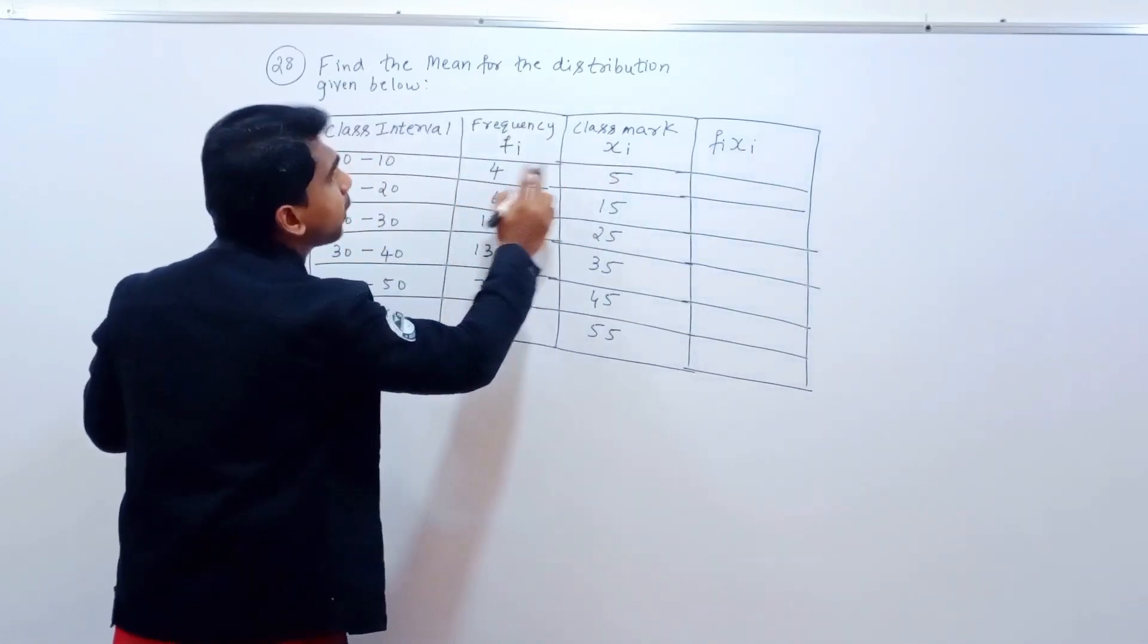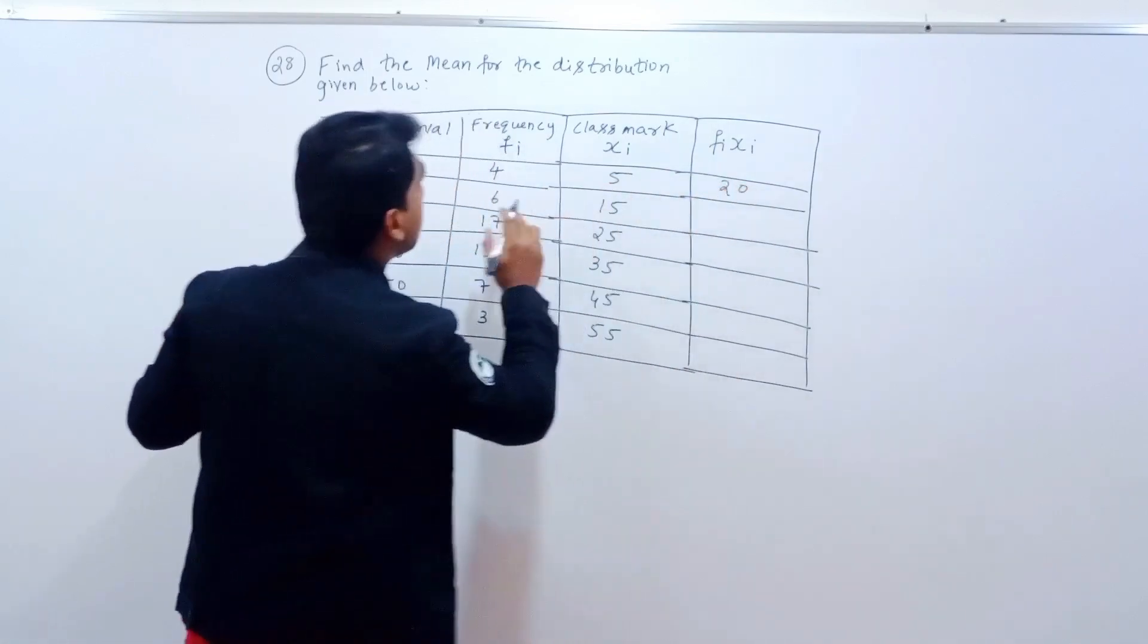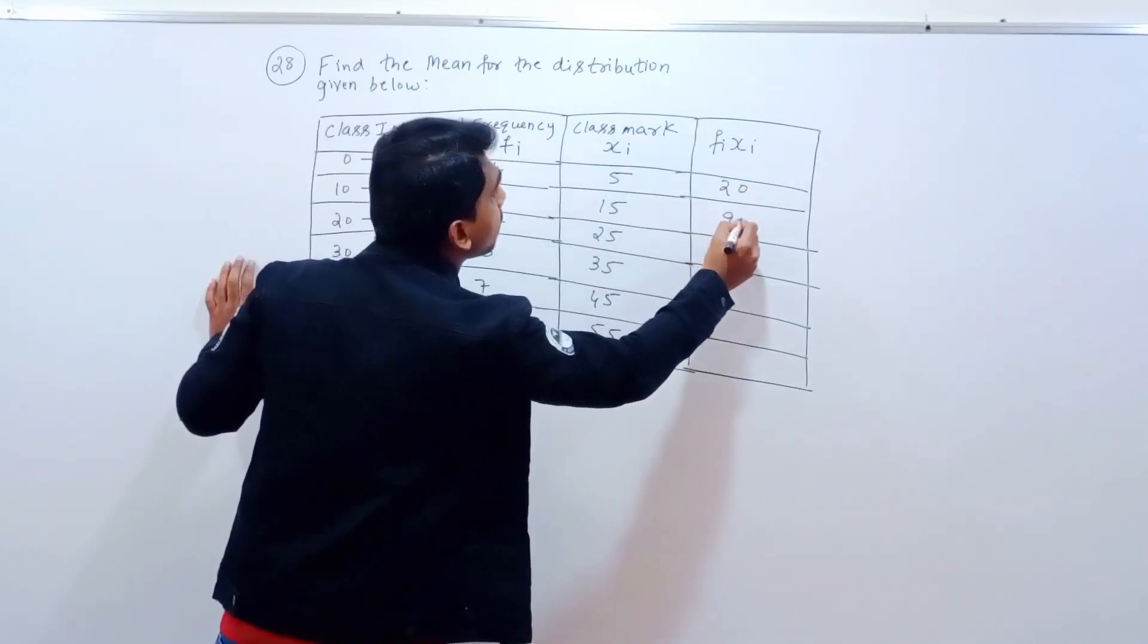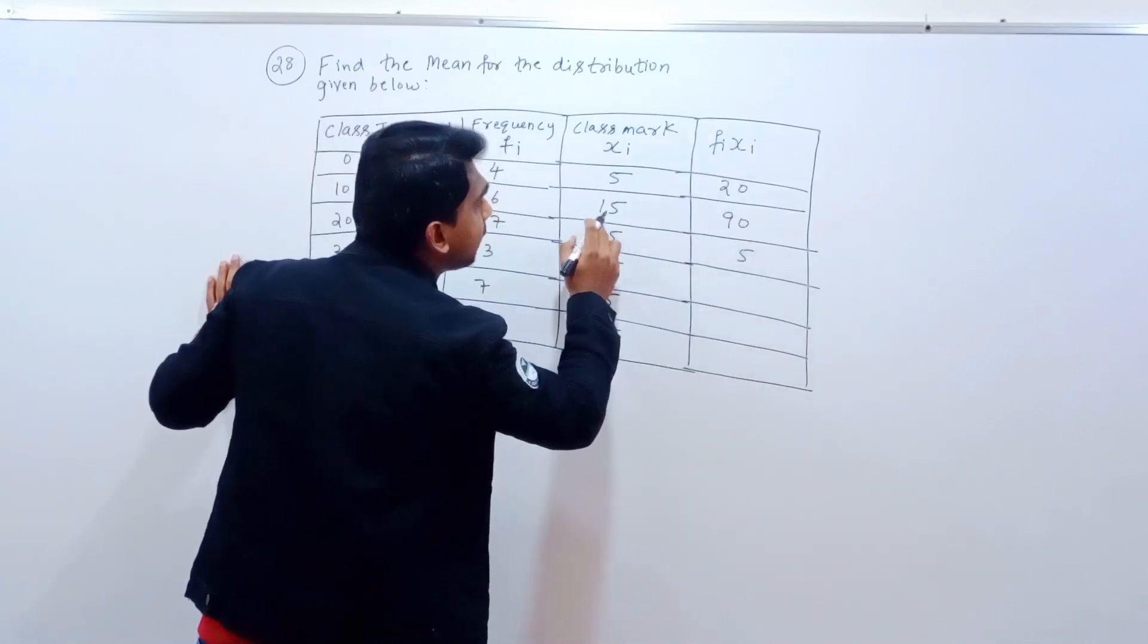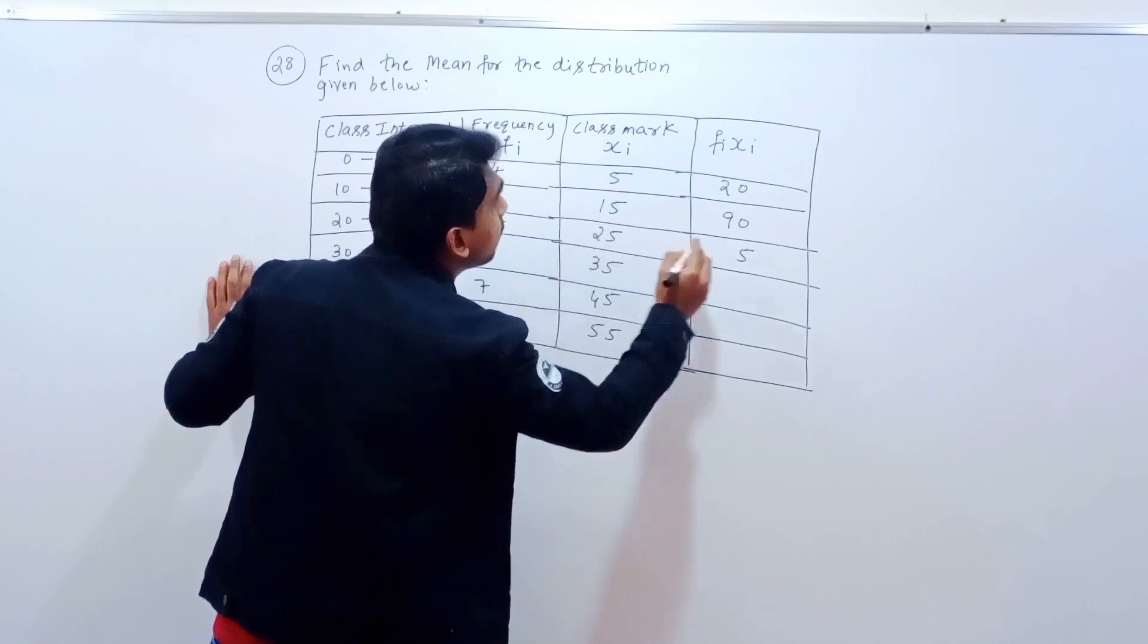f i times x i: multiply by 2, 4 times 5 is 20. 15 times 6 is 90. 17 times 5 is 85, 8 carry, 7 times 2 is 14 plus 8 is 22, which gives 425.